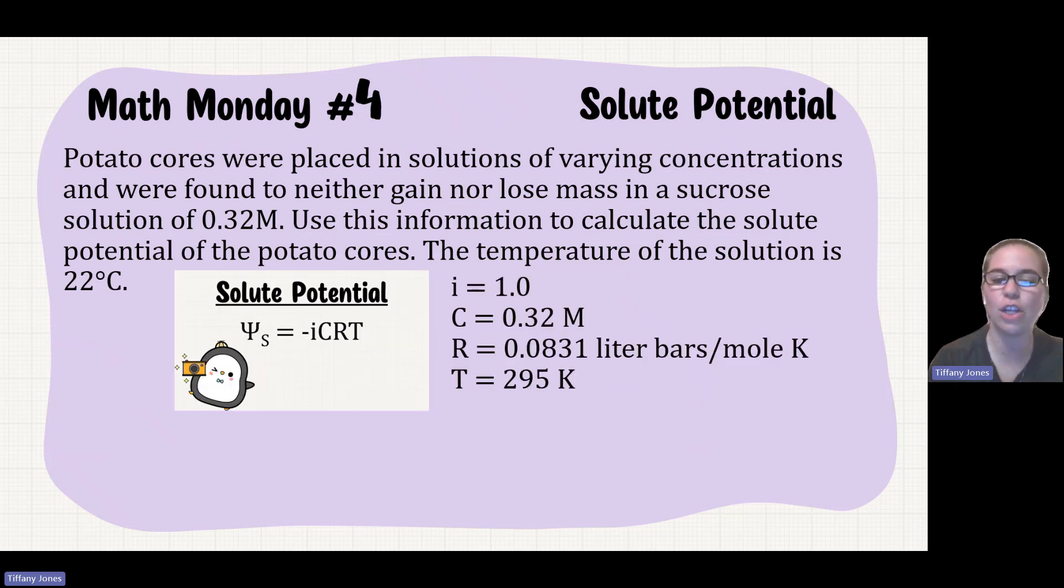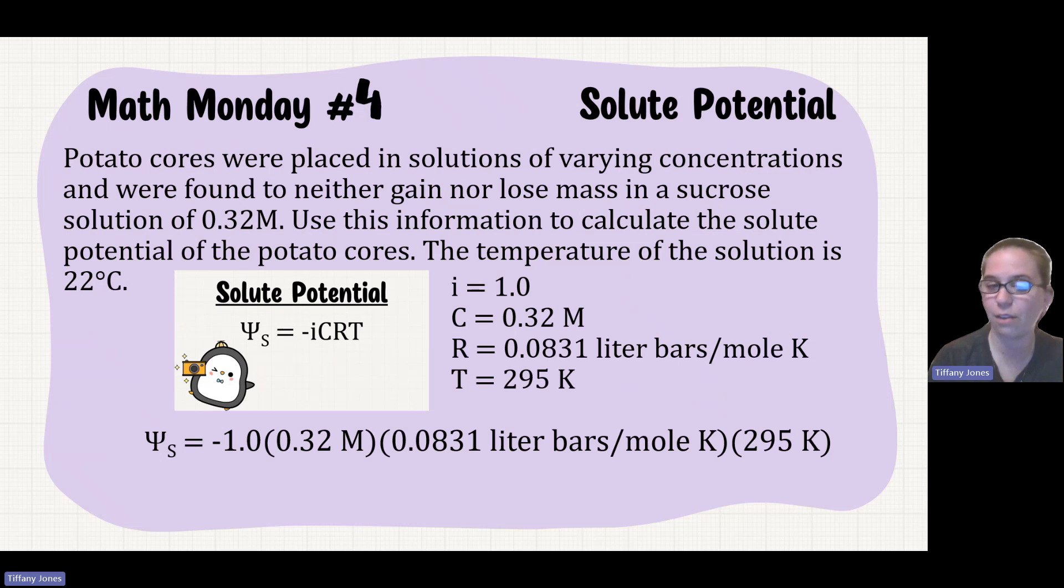So now we'll sub these into the equation. Negative i, so negative 1, times C, 0.32 molar, times R, 0.0831 liter bars per mole Kelvin, times T, which is your temperature, so that would be times 295 Kelvin. When you multiply all these together, you get negative 7.84 bars.